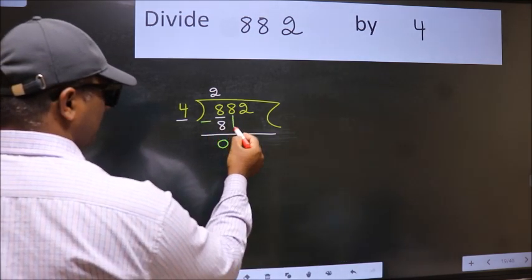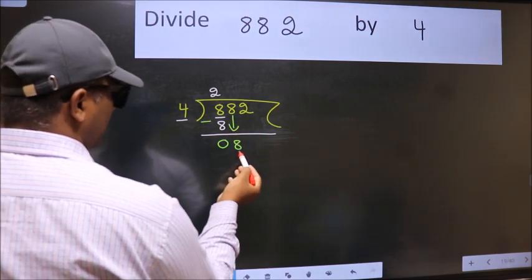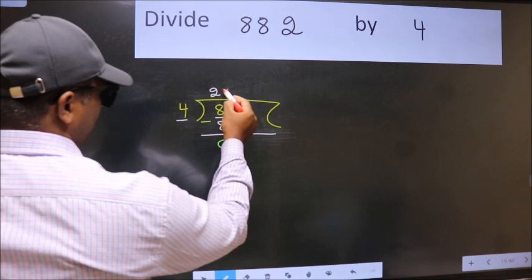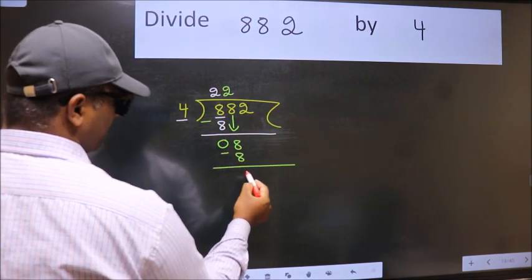After this, bring down the beside number. So 8 down. When do we get 8 in 4 table? 4 twos, 8. Now we subtract. We get 0.